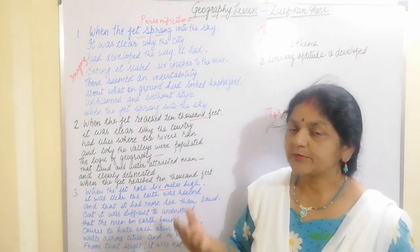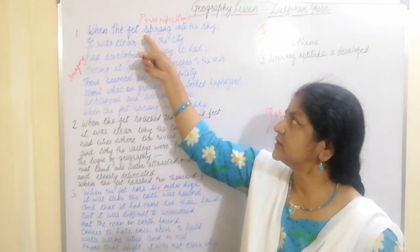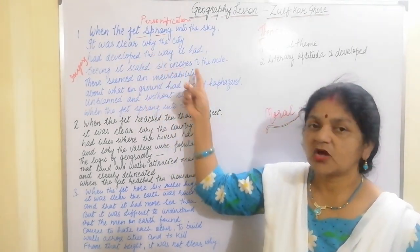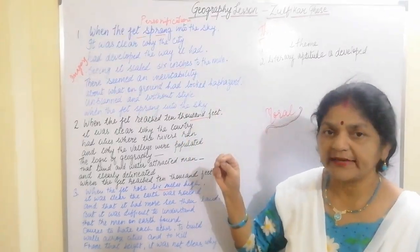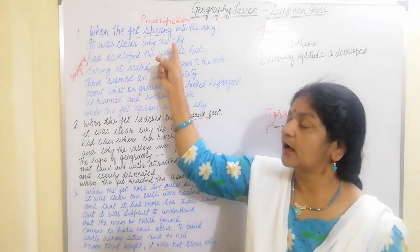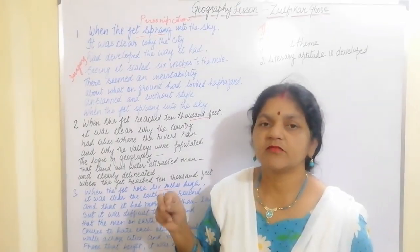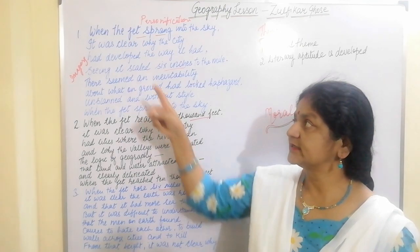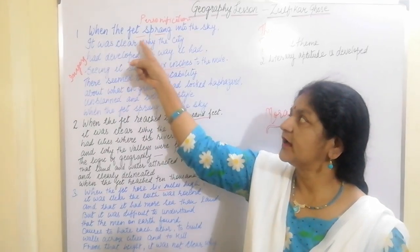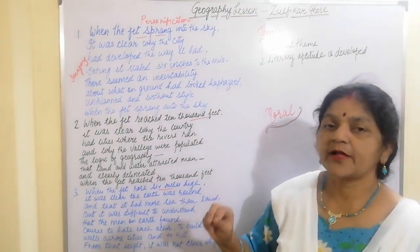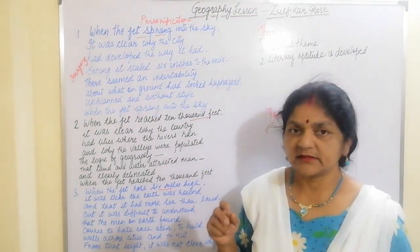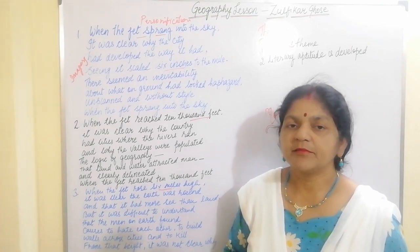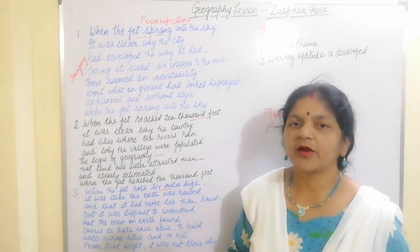Number three, personification. In this stanza, the poet has personified the aeroplane when viewed from a hundred feet from the ground. The line from the stanza is: 'the jet sprang into the sky,' as if the jet is a human being having a human quality.